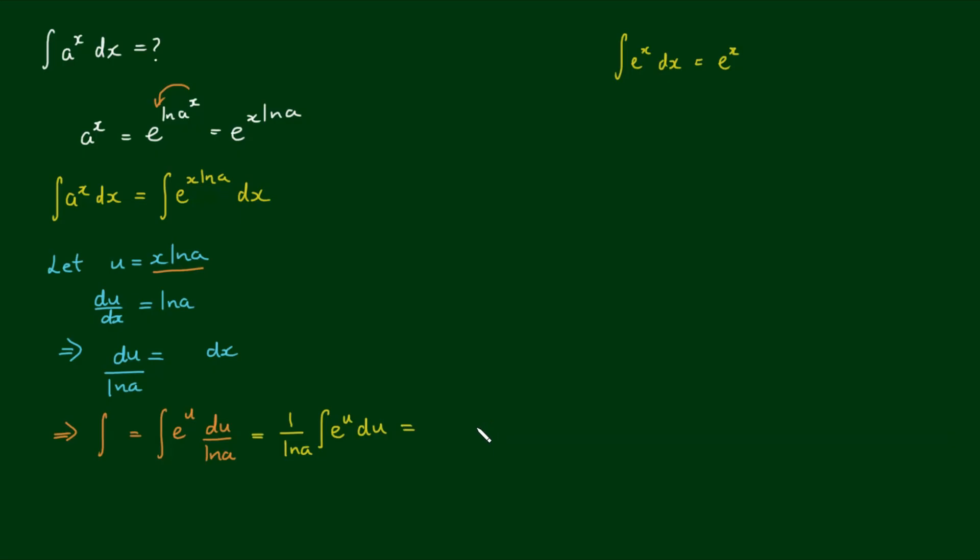Which just equals e to the u, multiplied by the 1 on log of a at the front.